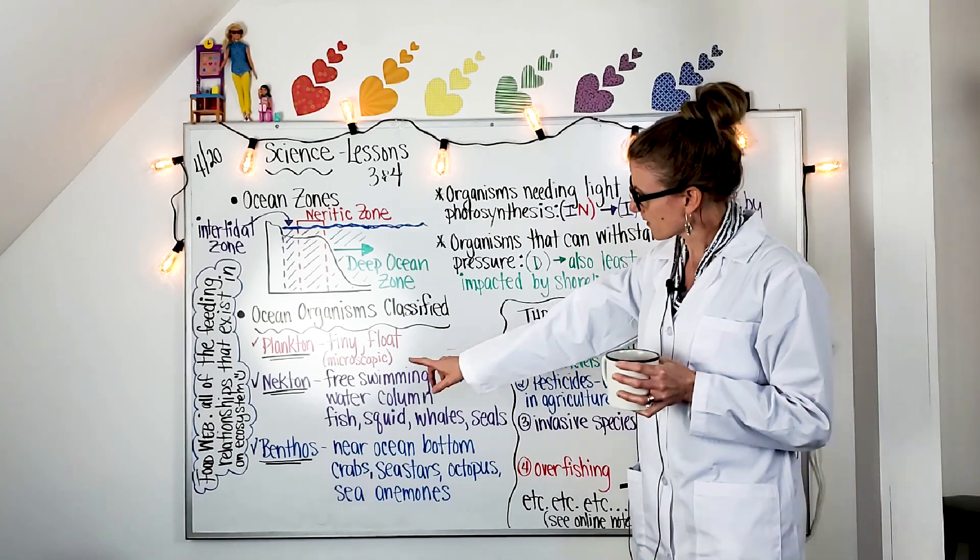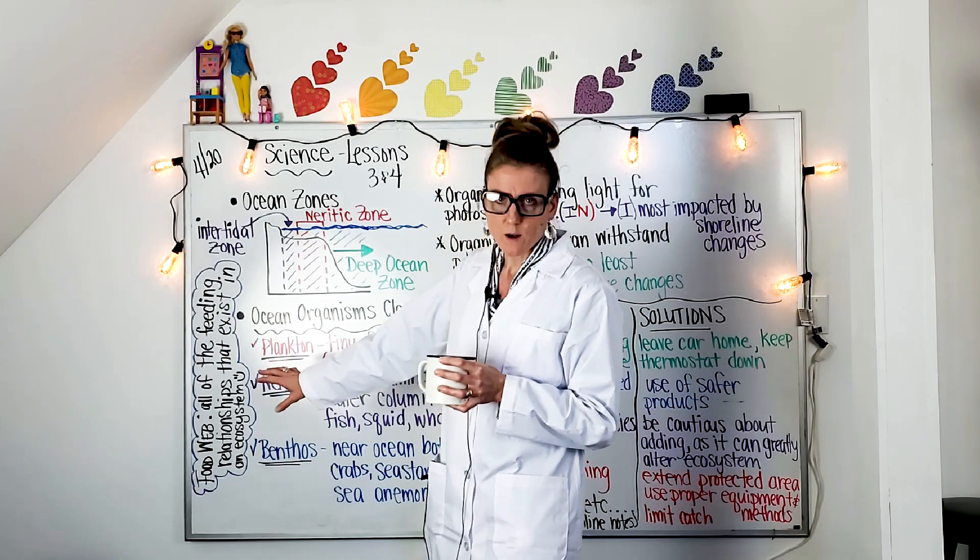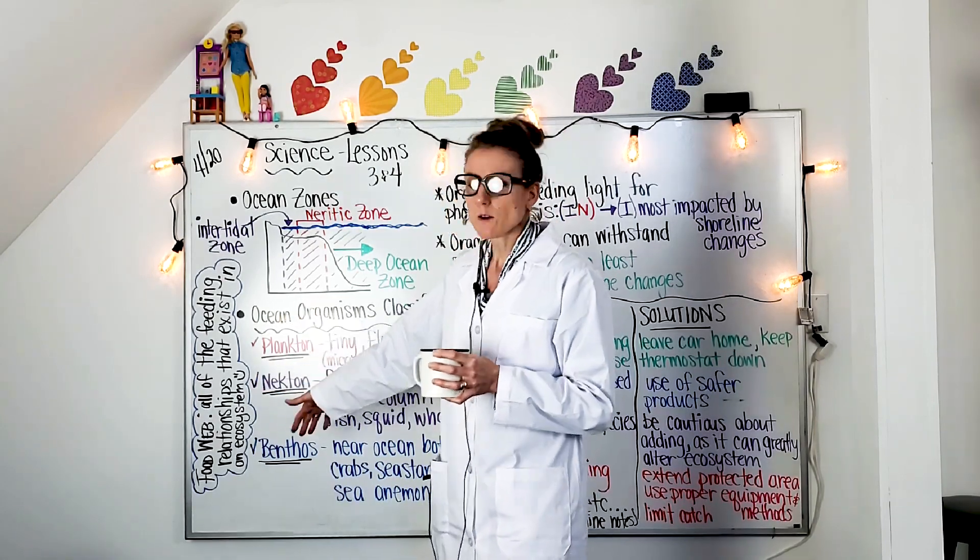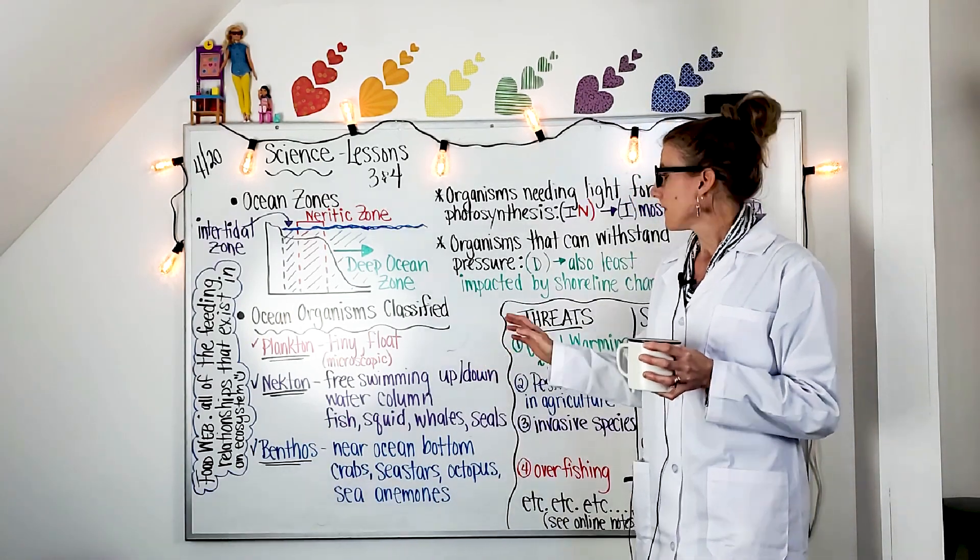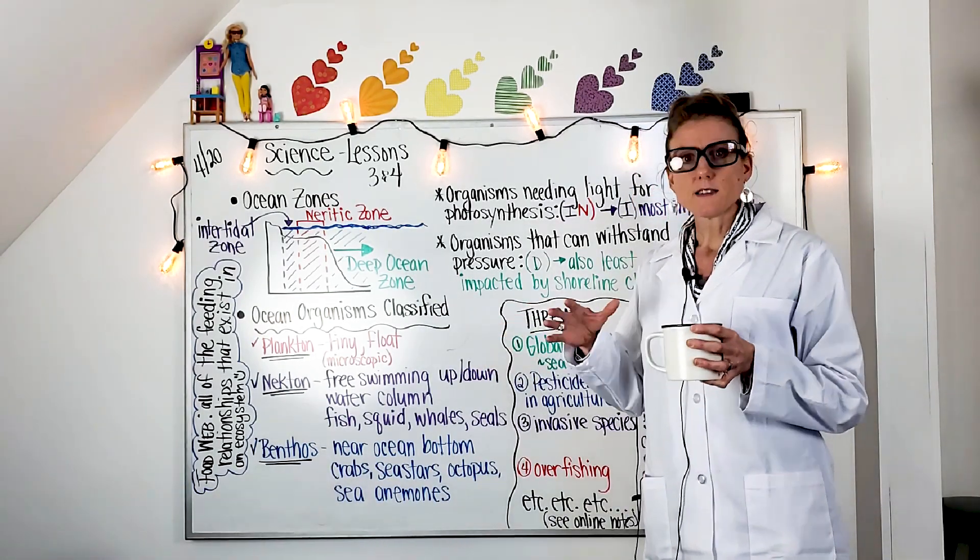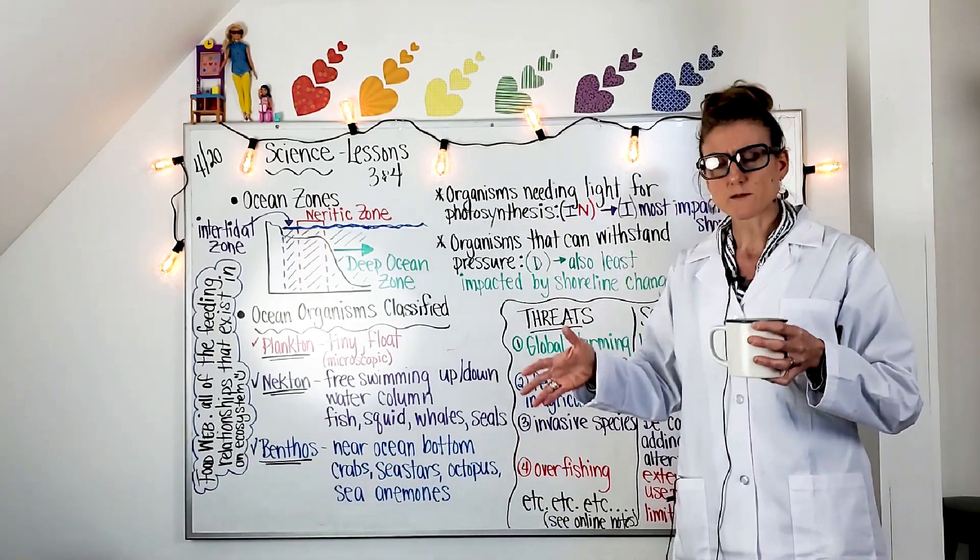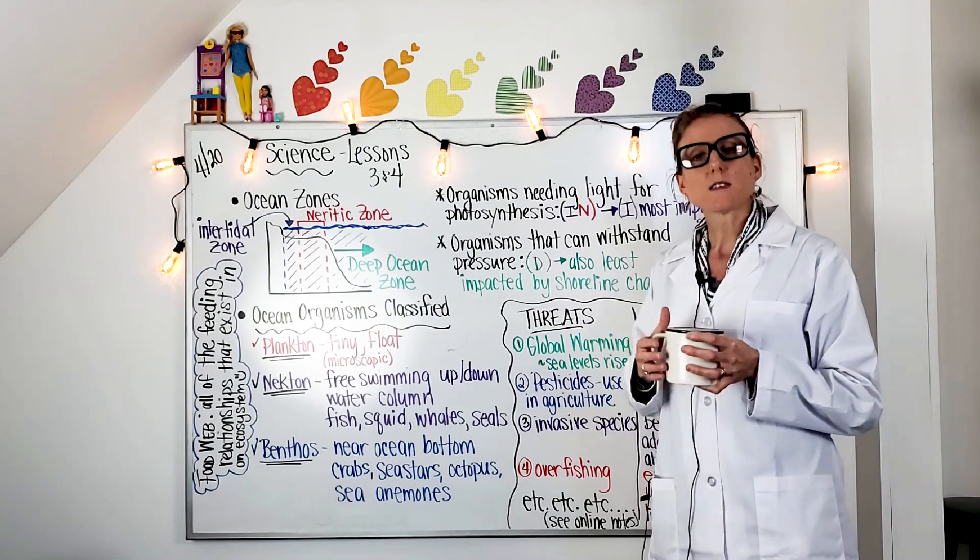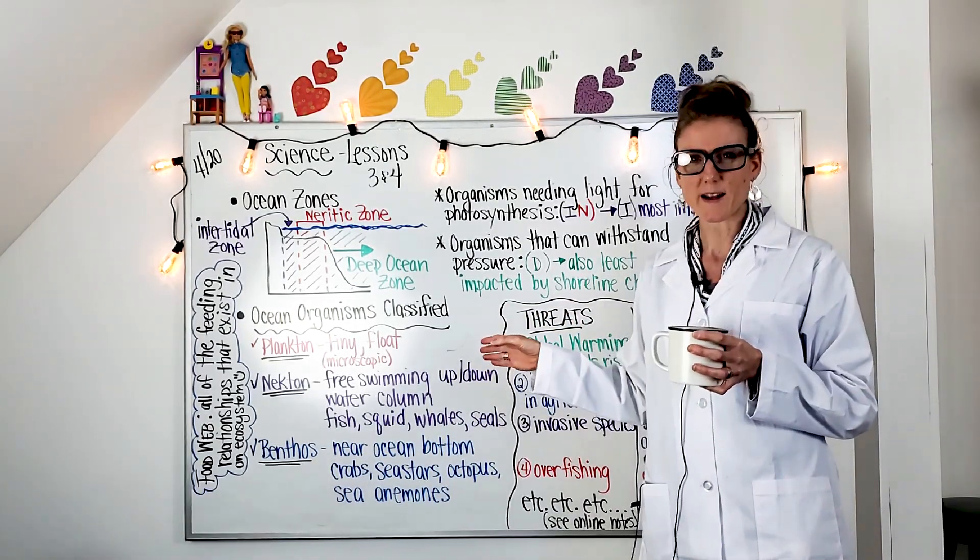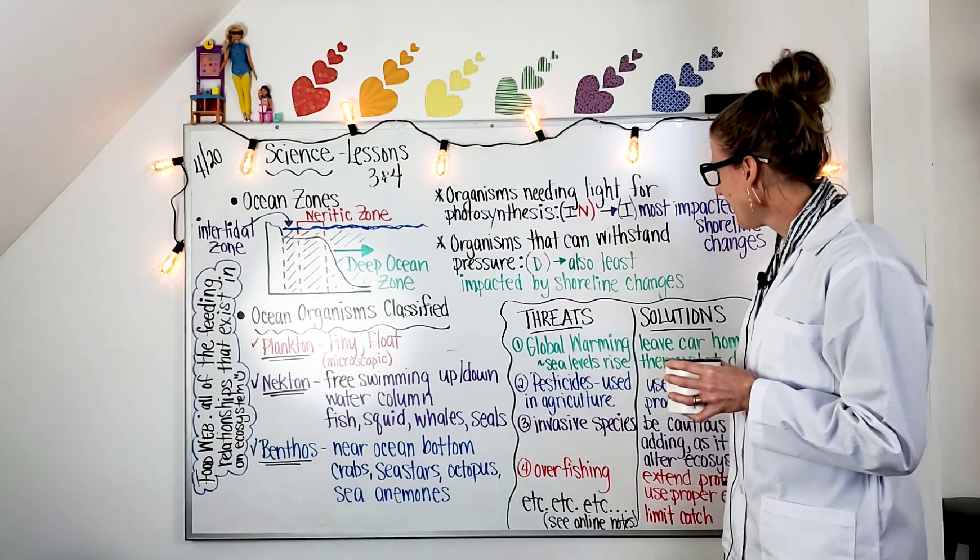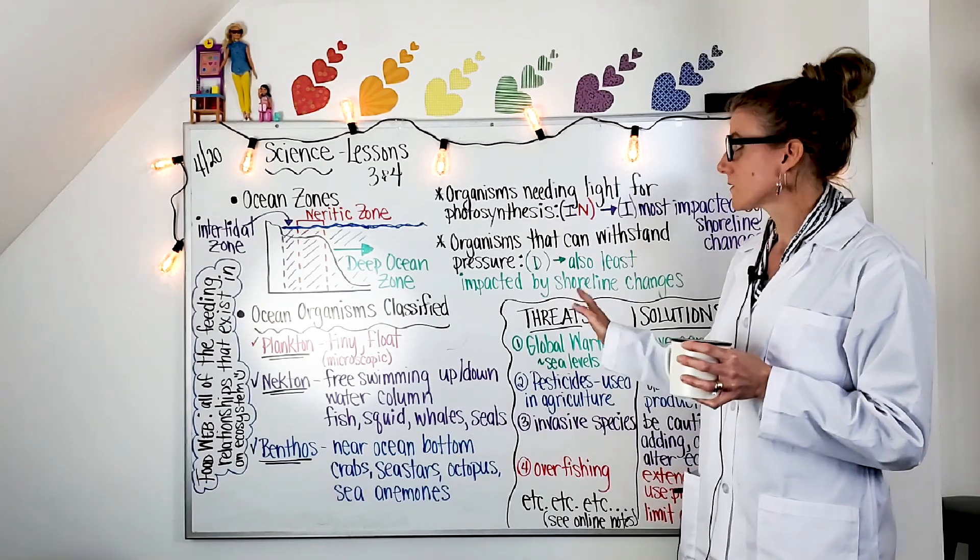And then I already talked about the food web, had to write it this way because I'm running out of space. But a food web, as you all already know, is the feeding relationships between any ecosystem. In our case, we're talking about the oceans. There is a really in-depth one that I put on the notes for an ocean with killer whales and different types of whales and plankton. It's much better than what I would be able to fit or draw on here. So check that out. And with that, that is essentially lessons three and four.